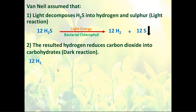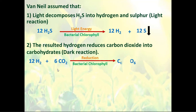So we have the 12 hydrogens that were produced combining with the carbon dioxide — do we need light? No, but we need the chlorophyll, and this process is called reduction. What do we get? We get one molecule of glucose plus six water.